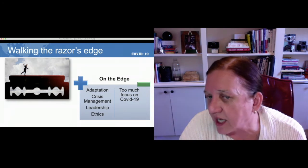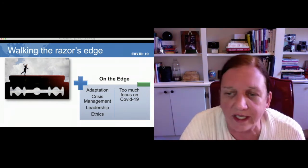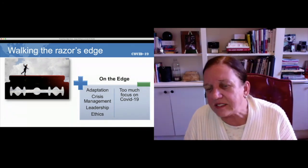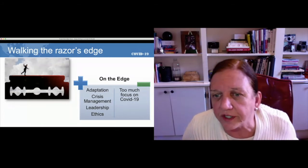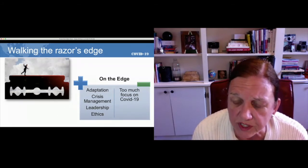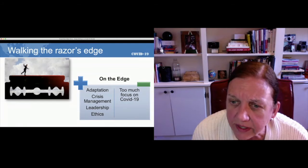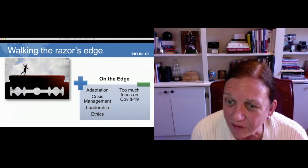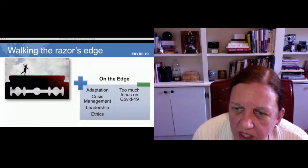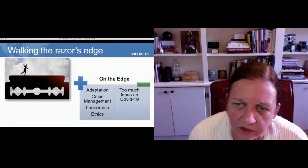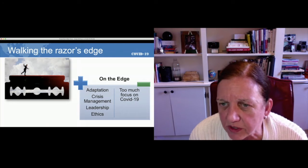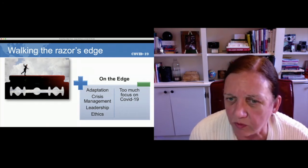On the other hand, if you use a theoretical lens like adaptation, crisis management, leadership, or ethics, what we're going to have is a case that has elements that are transferable. The learning the student gets from reading your case — yes, it's about COVID-19 and the challenges it posed for business — but these theoretical lenses are going to allow that case to have a life beyond the pandemic. If we frame the case with these mental models or frameworks, there's going to be good learning we can get from the case well after the pandemic. What we're trying to do is create something that isn't so dated that no one will want to read it.